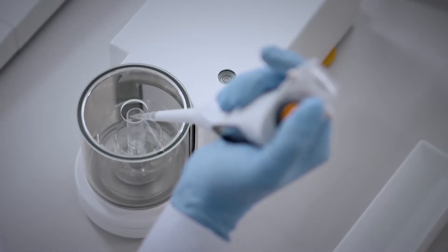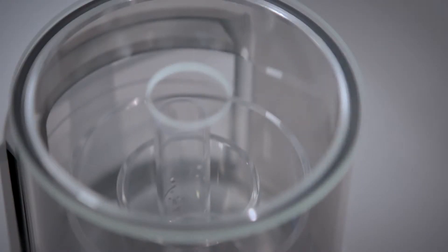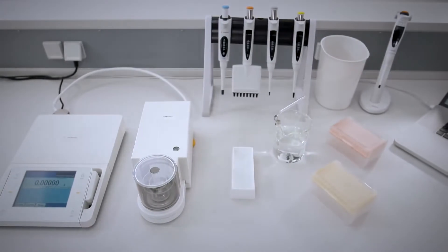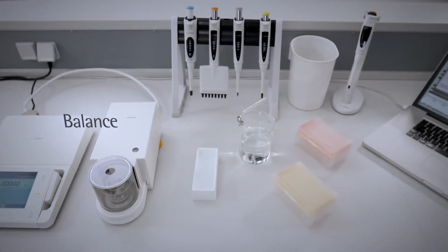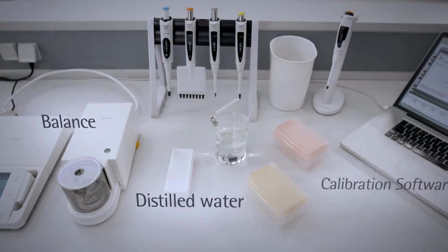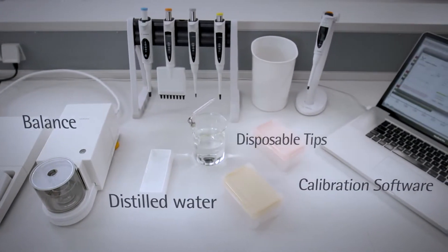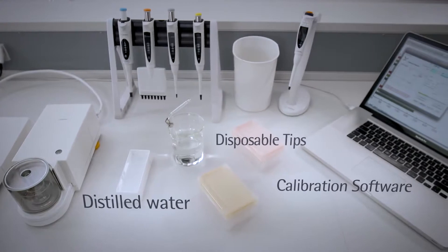One of the key aspects of pipette calibration is equipment. To successfully ensure your pipette's accuracy and precision, you will need a balance, distilled water, calibration software, as well as disposable tips for your pipettes.